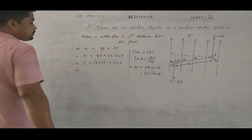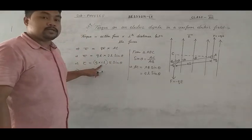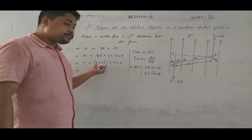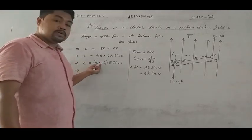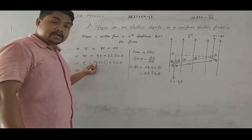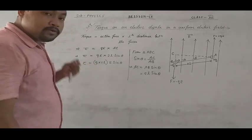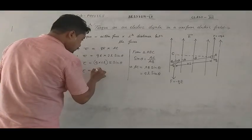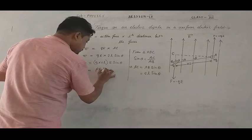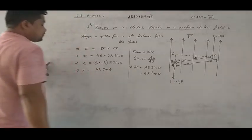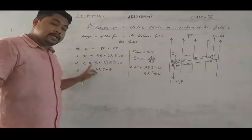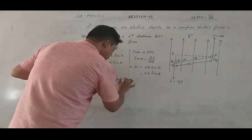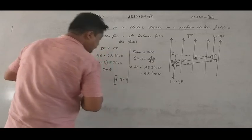But q into 2L is the electric dipole moment. The electric dipole moment is equal to the product of the magnitude of the charge and the dipole length, and it is a vector quantity. So tau is equal to P times E times sin theta, where P equals q into 2L, called electric dipole moment.